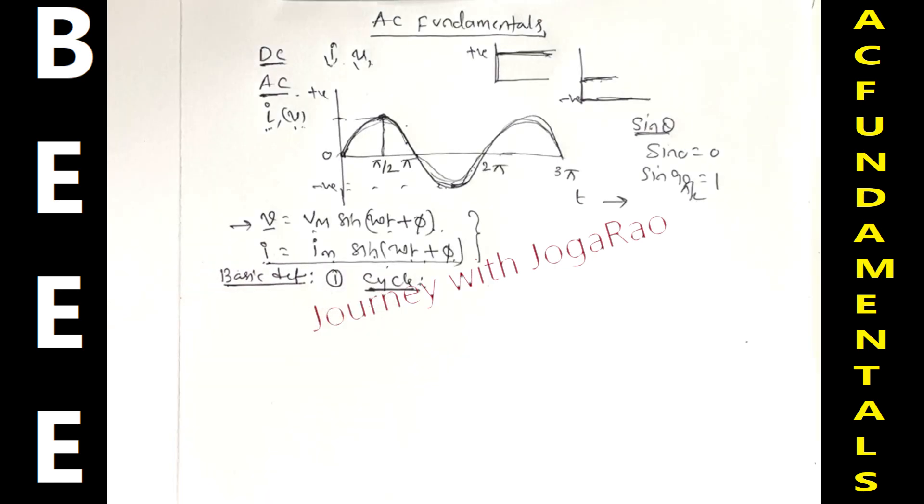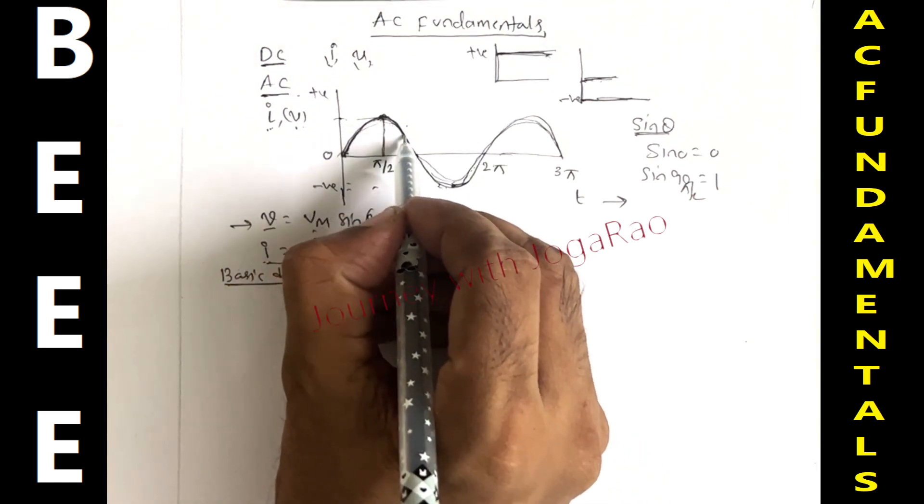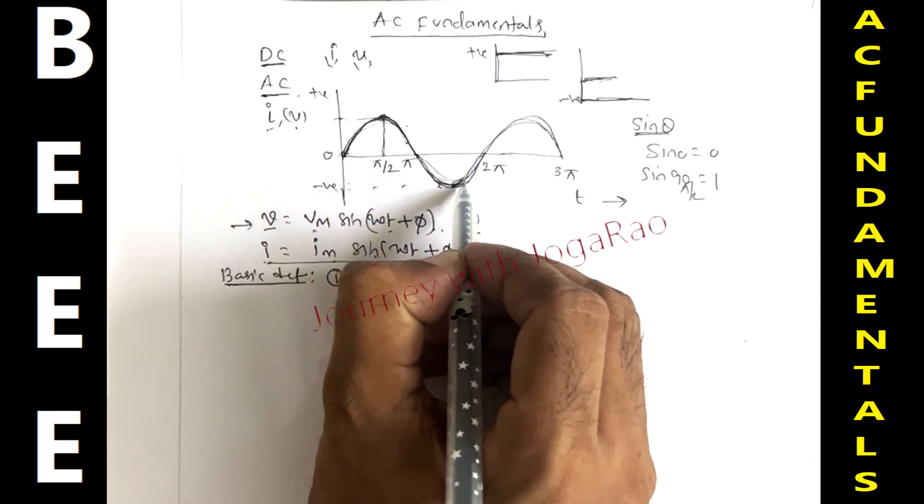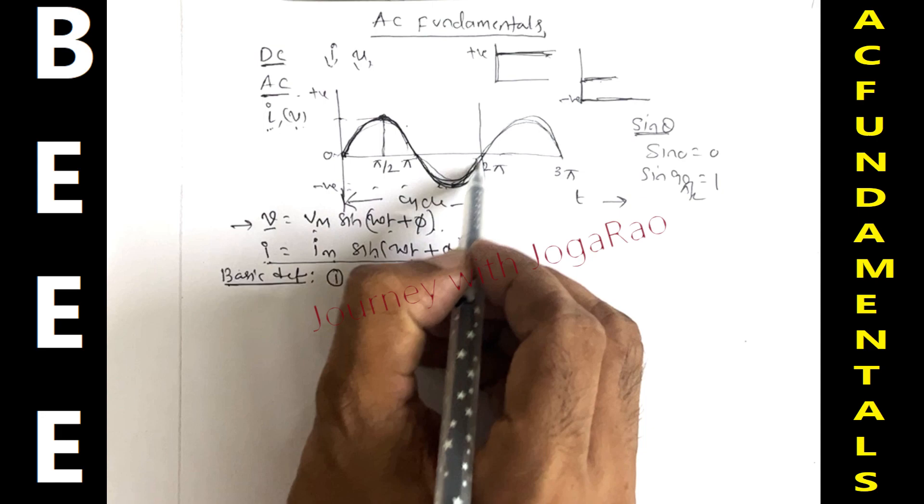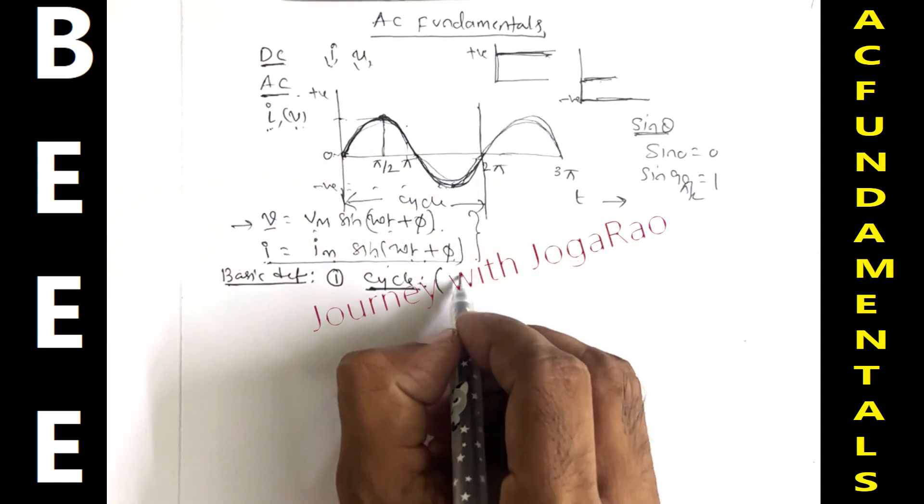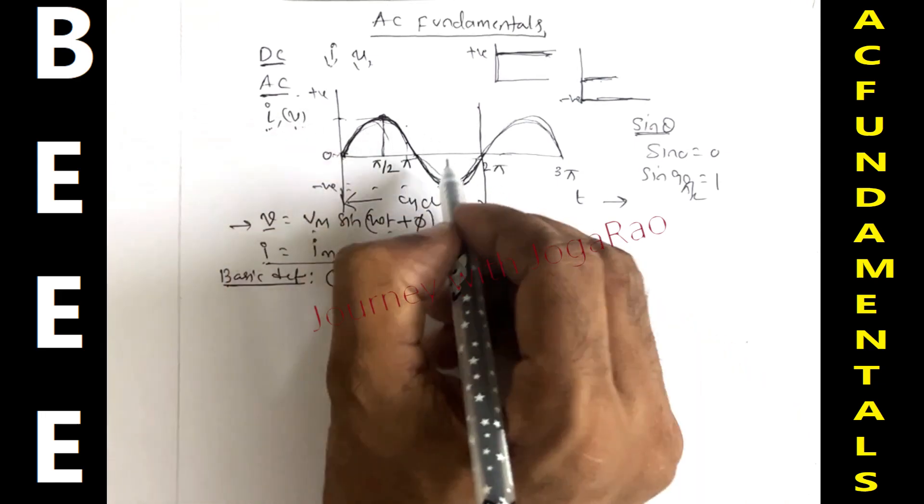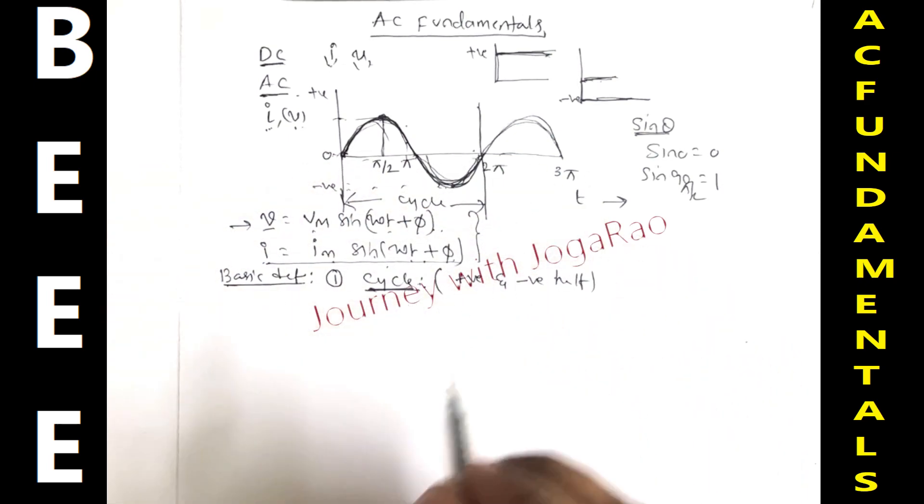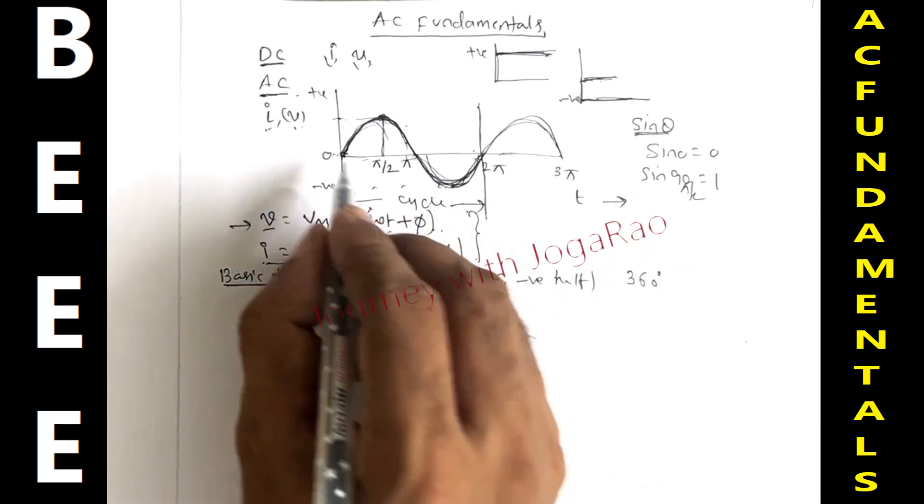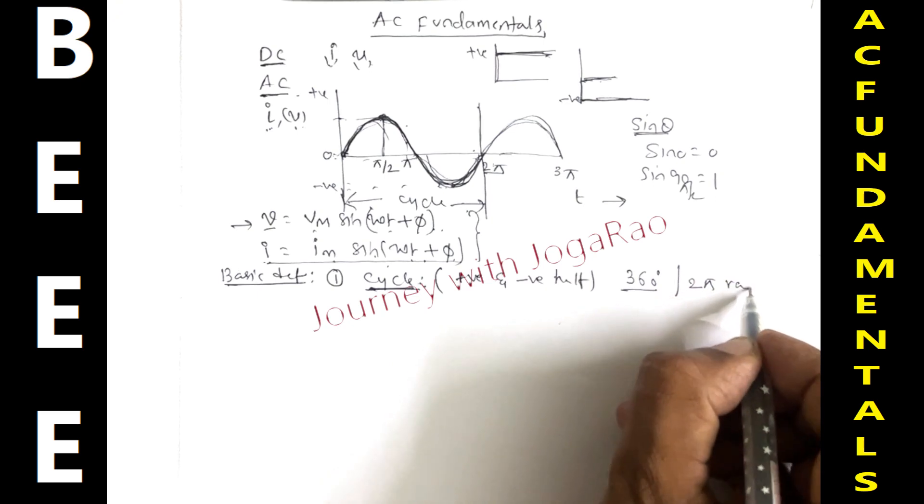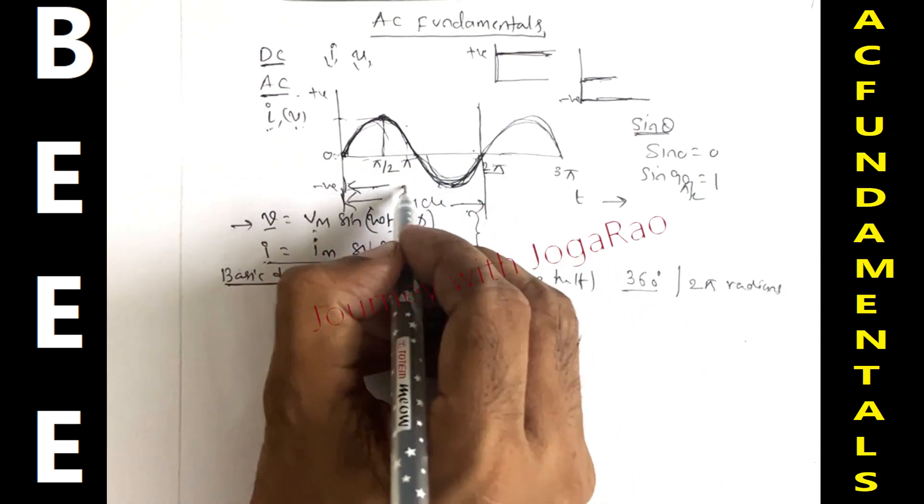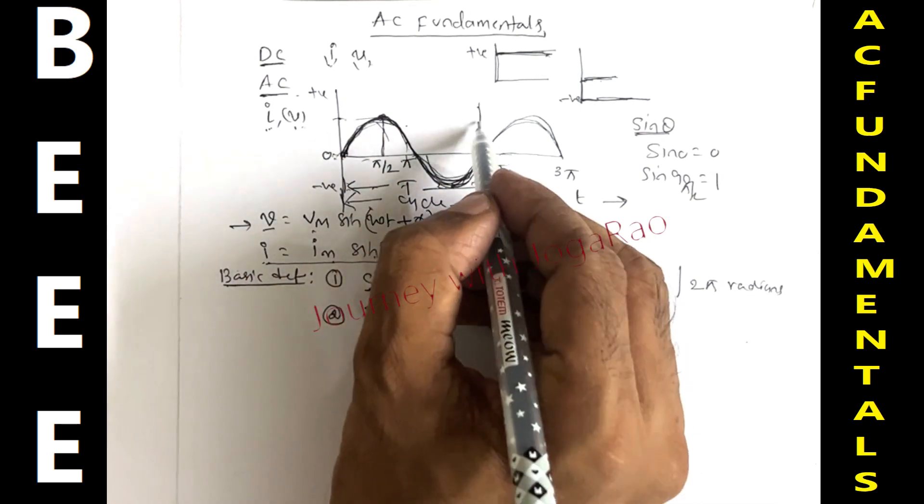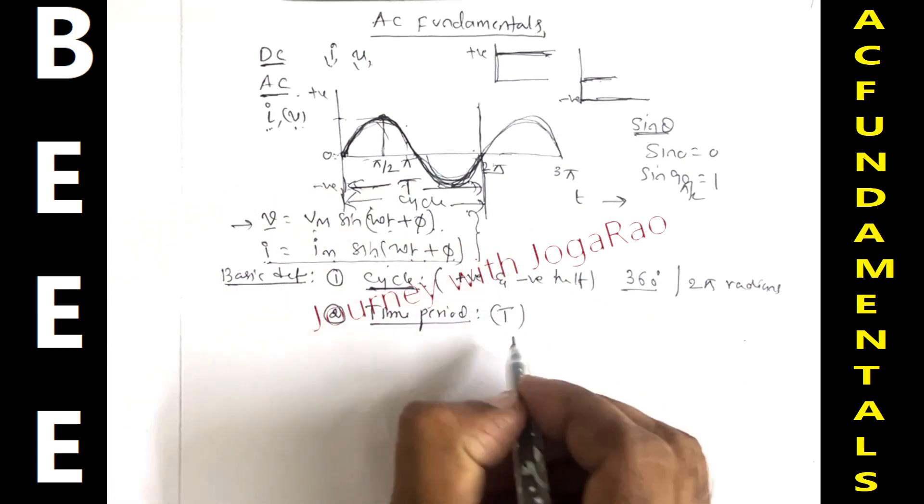The first important definition: a complete set of positive and negative values of an alternating quantity is known as cycle. One positive cycle and one negative cycle complete. The time taken to complete one cycle of an alternating quantity is called time period.